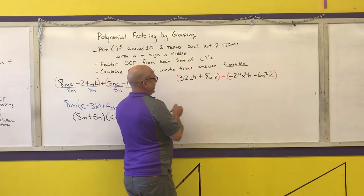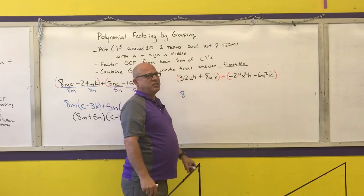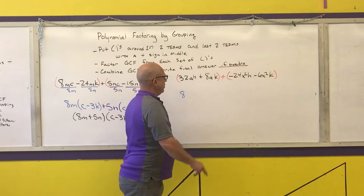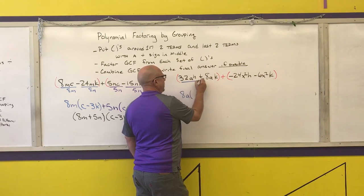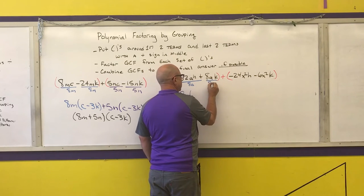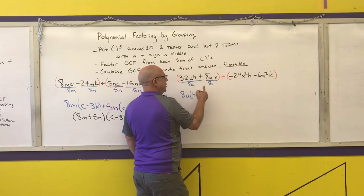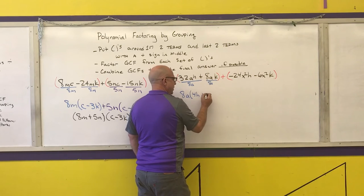The greatest integer in common between 8 and 32 is 8. Write down each variable that appears in every term to its lowest power — A is the only one that appears in every term, and its lowest power is the first. After division: 32 divided by 8 is 4, A over A is 1 leaving H; 8 divided by 8 is 1, A over A is 1 leaving K.